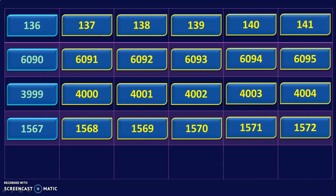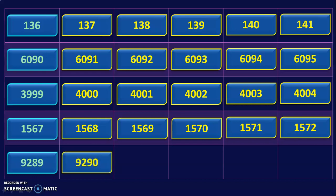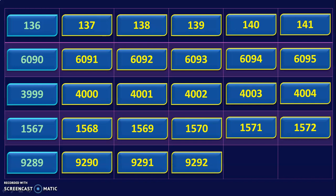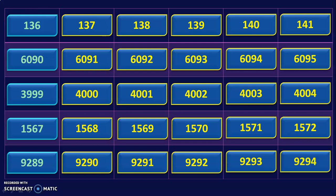Let us do one more question. The number given is 9,289. The series of numbers following this are 9,290, 9,291, 9,292, 9,293, and 9,294. It is very important for children to know the series of numbers from 1000 up to 9,999. Giving them practice in batches like this will definitely help them in all the upcoming activities in class 3.